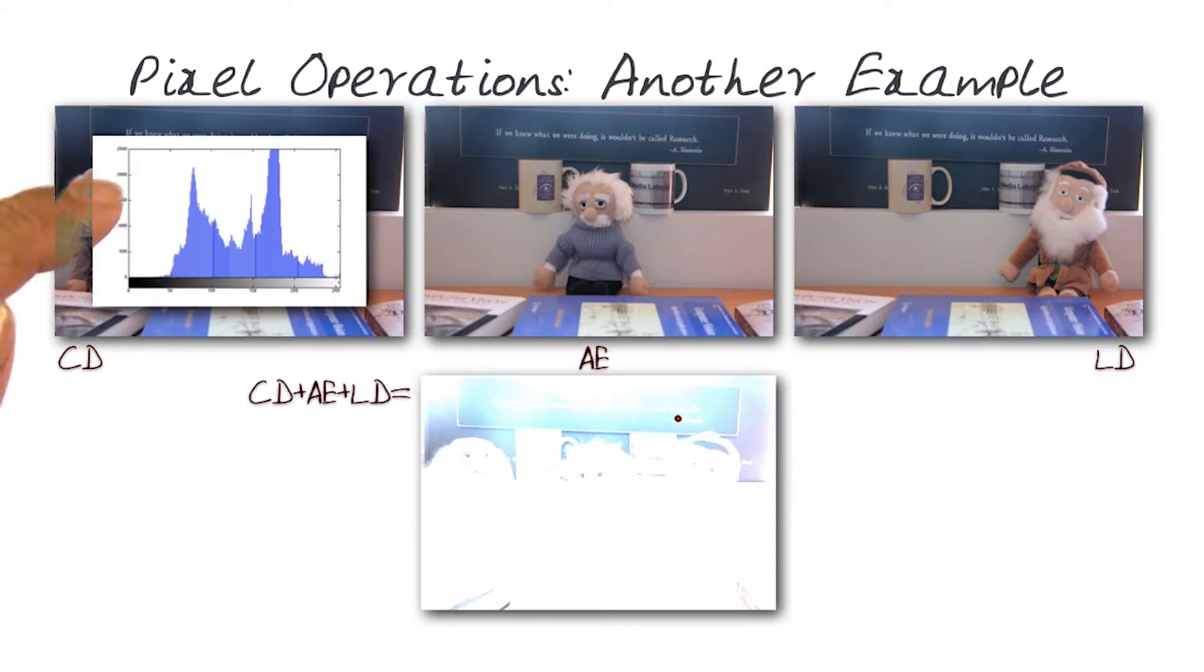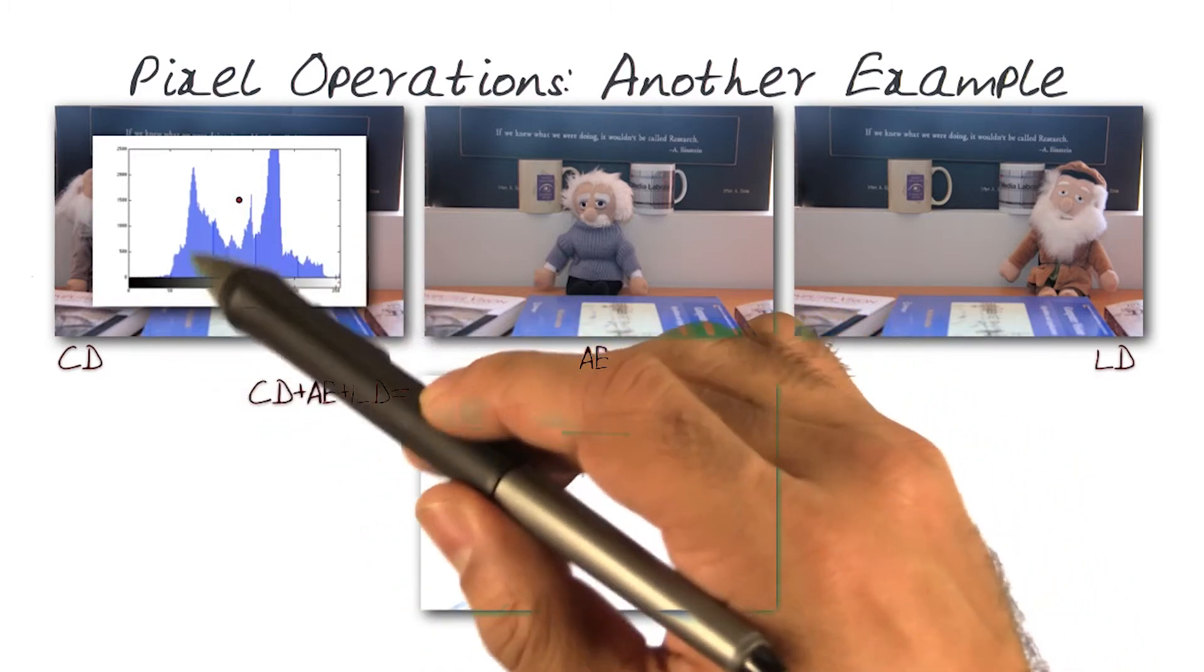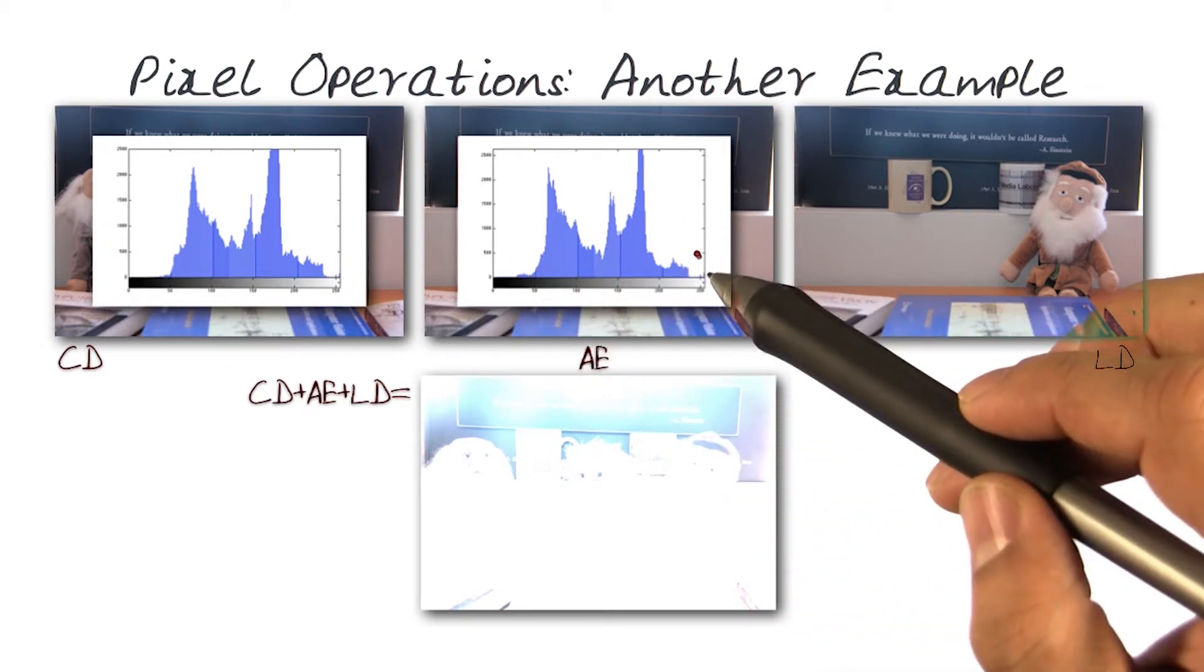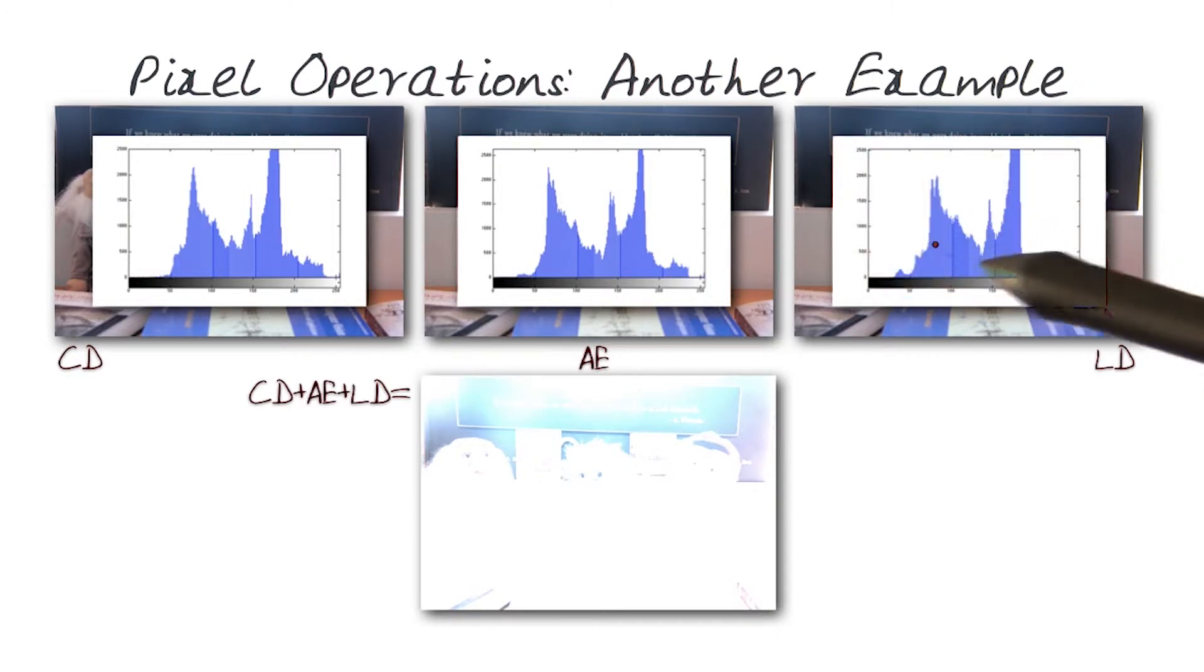The original histogram of this image basically shows that if this is 0, this is 255, most of the information is in the middle. Similarly, Albert Einstein, same case here, a lot of the information intensities are in the middle. In this case, the same thing is true, a lot of the intensities are in the middle.